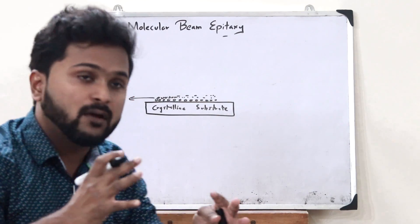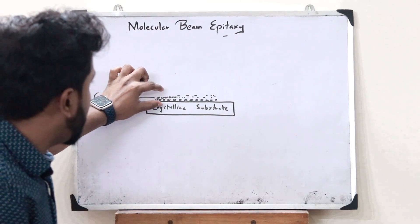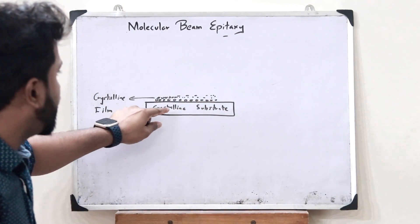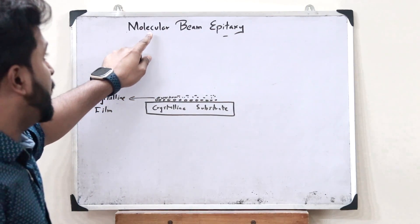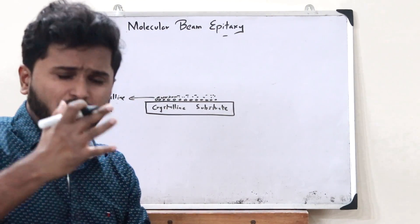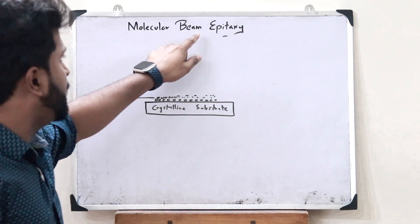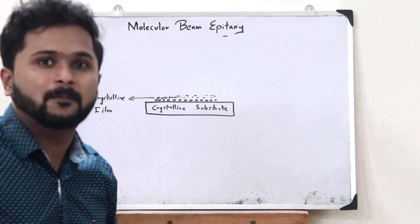So one such method by which we can now create a crystalline film on top of a particular crystalline substrate is molecular beam epitaxy. So how do we do this? What do you actually mean by the term molecular beam epitaxy?